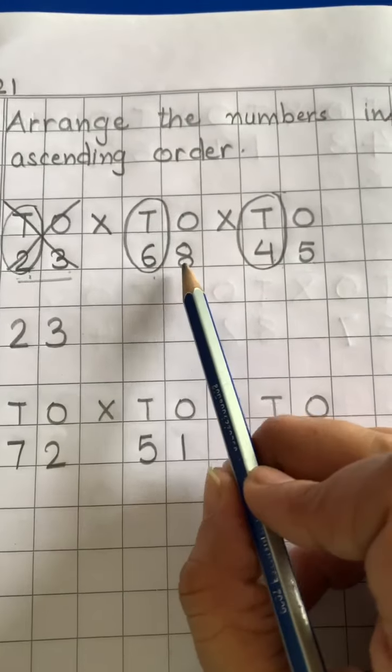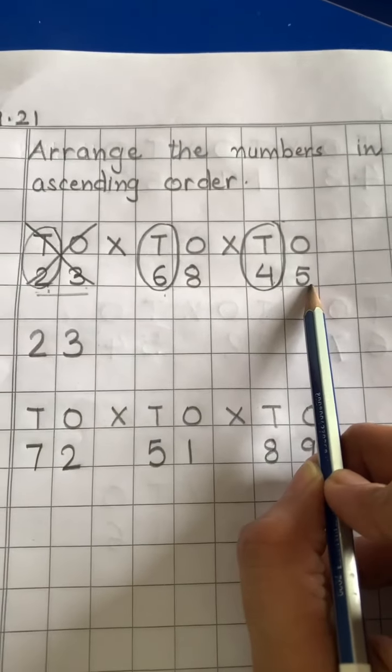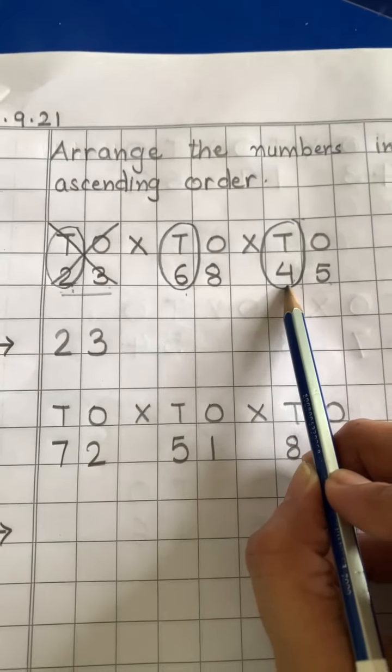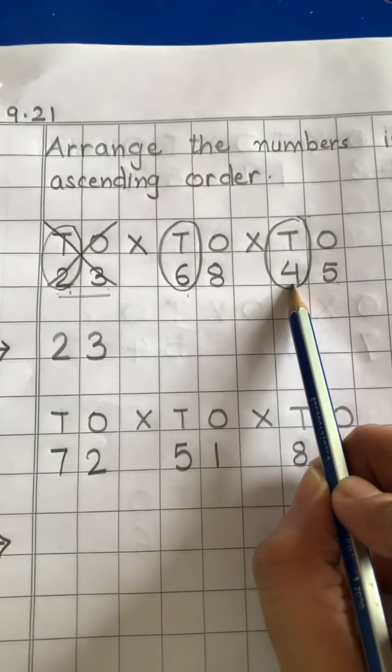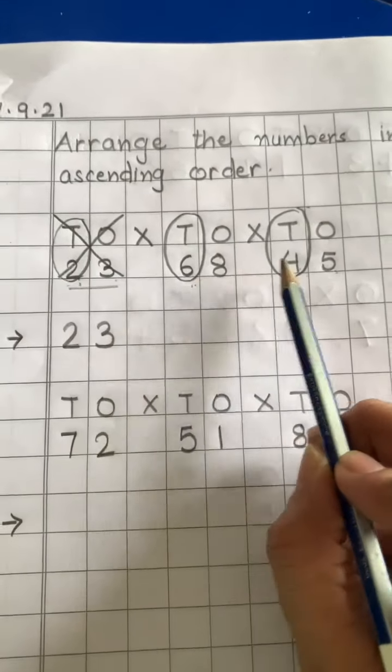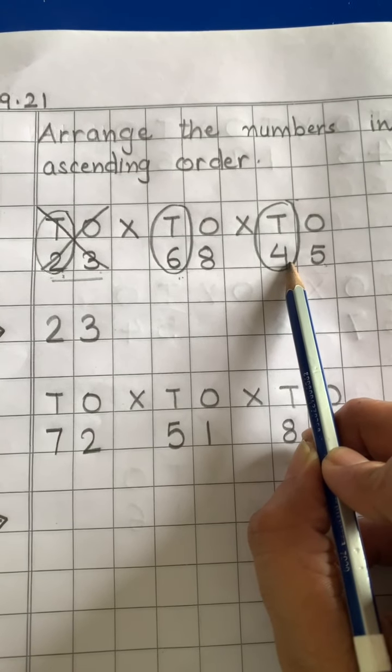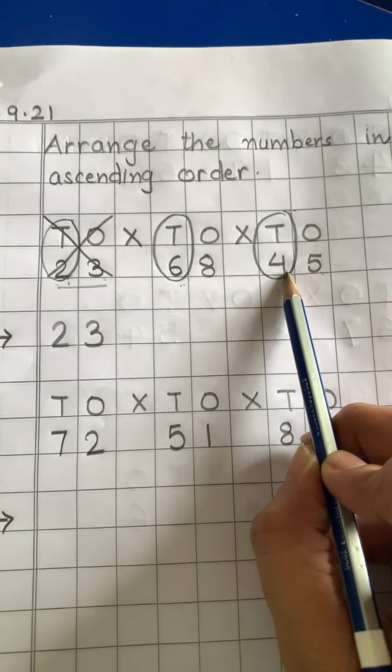Now, aap koon-se numbers bache hai? Two numbers are left. Now, in ki tens place peh, find karo konsa number small hai? Six is small or four is small. Koon small hai? Four. Yes.